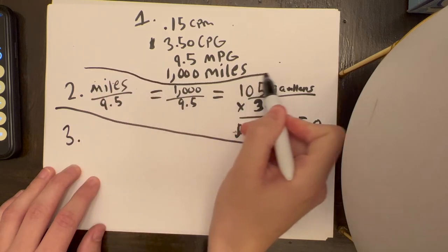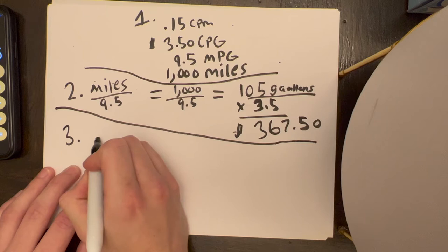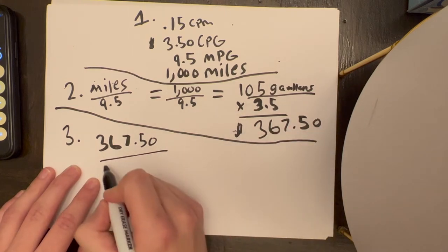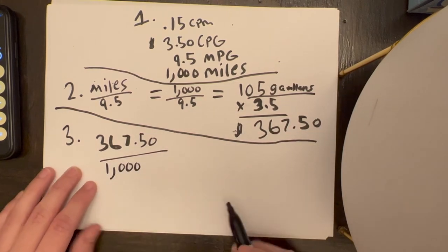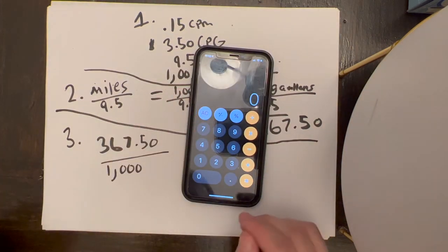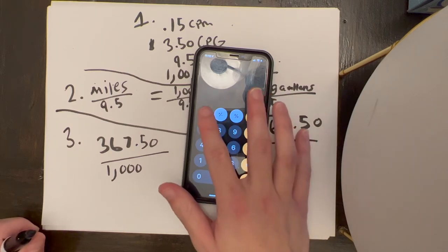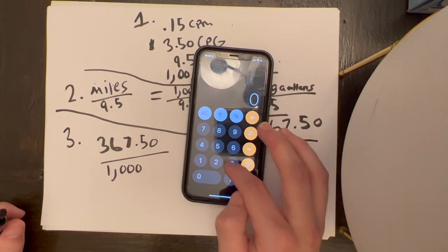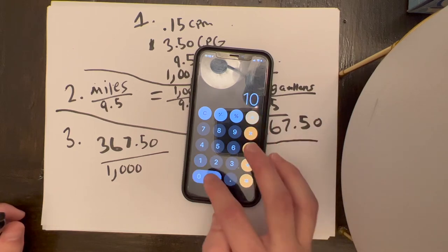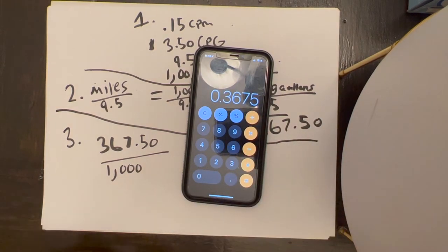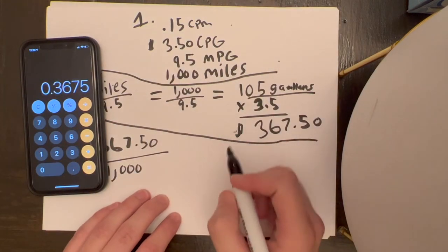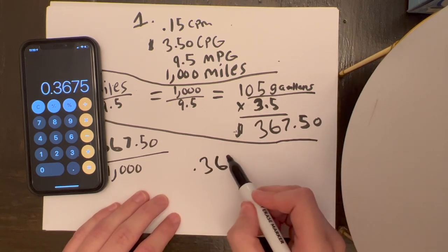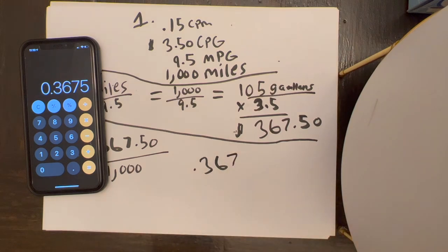Our third step here is to divide our total cost to go 1,000 miles divided by 1,000. I'm not sure if you're good at math, but I can typically look at this and tell you it's going to be about 0.367. But anyways, we'll just go ahead and do it. $367.50 divided by 1,000 miles is 0.367. We'll cut off the five. This is what it costs you: 36.7 cents per mile.